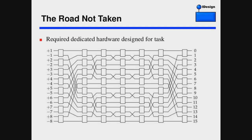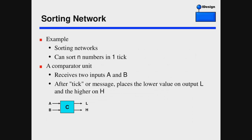Doing this kind of processing required, at the time in the 70s or late 60s, dedicated hardware designed for the task. Here's a typical mesh or network of processing units — all wired up together to achieve some kind of processing task. This is dedicated, specific hardware setup using parallel computing.